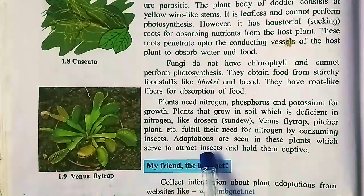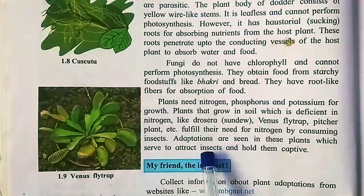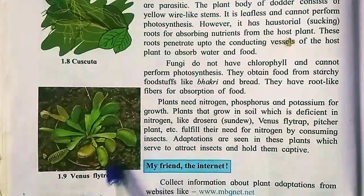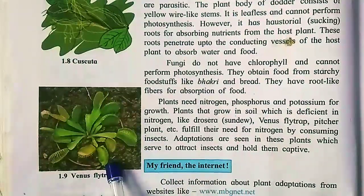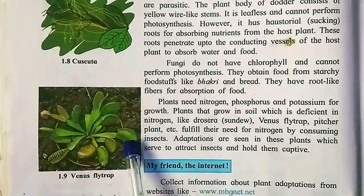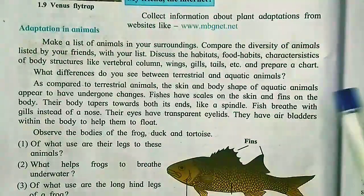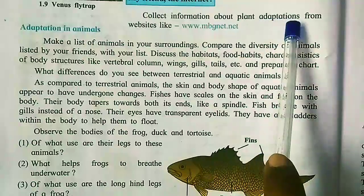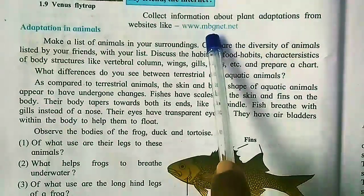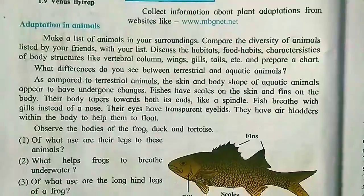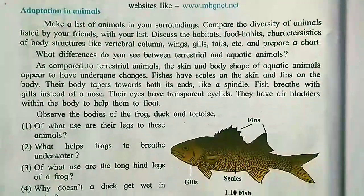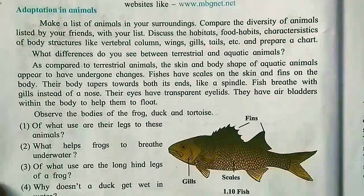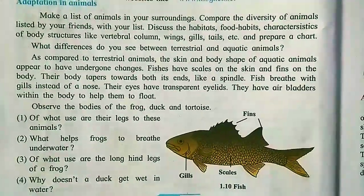Drosera, Venus flytrap, and pitcher plant fulfill their need for nitrogen by consuming insects. Their adaptation is to attract insects with jelly and then kill them. You can search on the internet or Google to find photos of these plants and their adaptations. Next, we move to adaptations in animals.